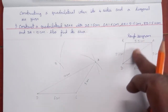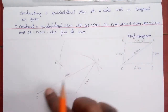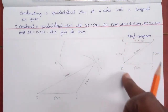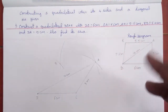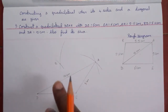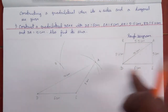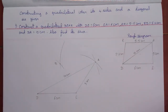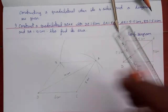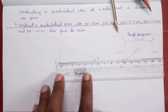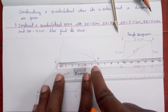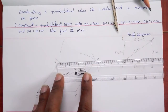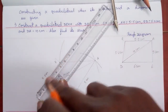According to the measurements, we are drawing the main diagram. Join AR and DR using the scale. You can cross-check: AR should be 5.5 cm exactly, and DR should be 5.2 cm. This completes your quadrilateral DEAR.